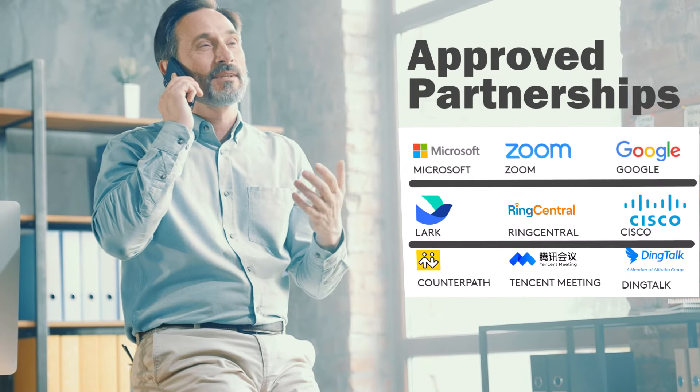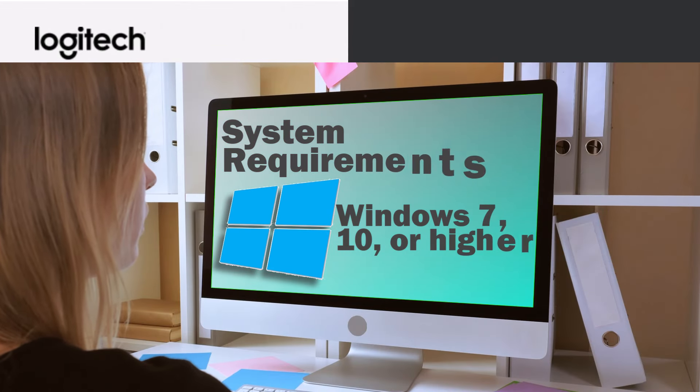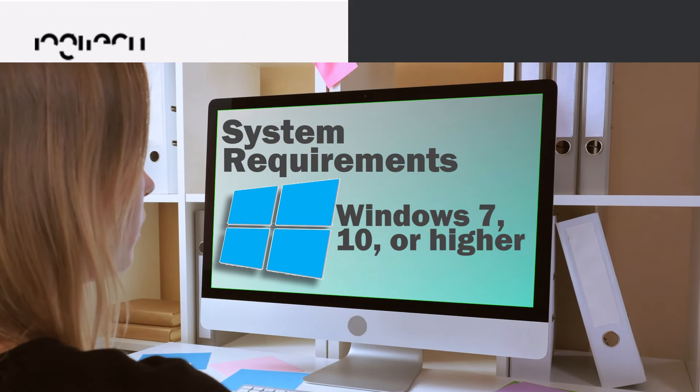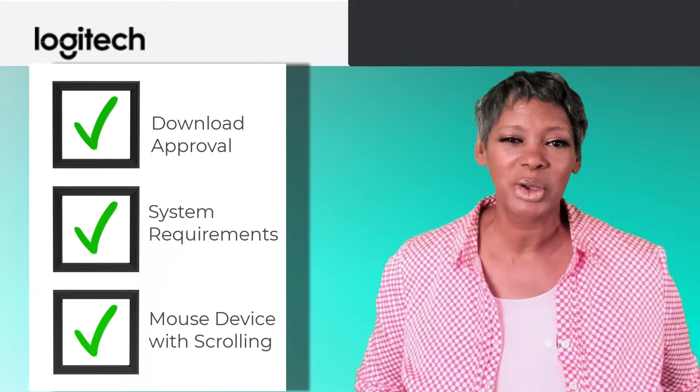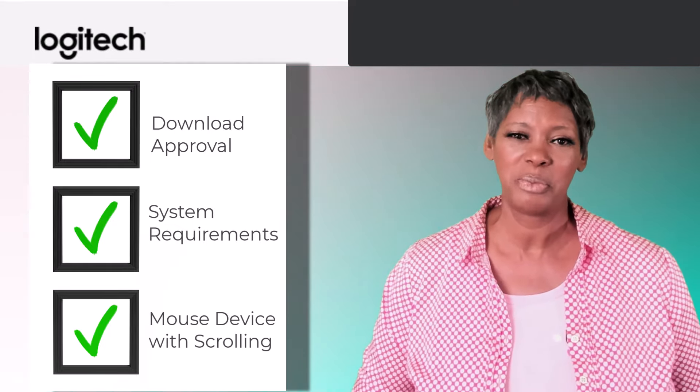Here's how to access the feature. Make sure you are compatible with Windows 7 or Windows 10 or higher, and for Mac users, you must have Mac 10.13 or higher. Next, ensure you have a mouse with a middle scrolling feature. You can purchase one from Logitech directly or from a local store. Once you have met the system requirements and have the proper device, you're ready to proceed.